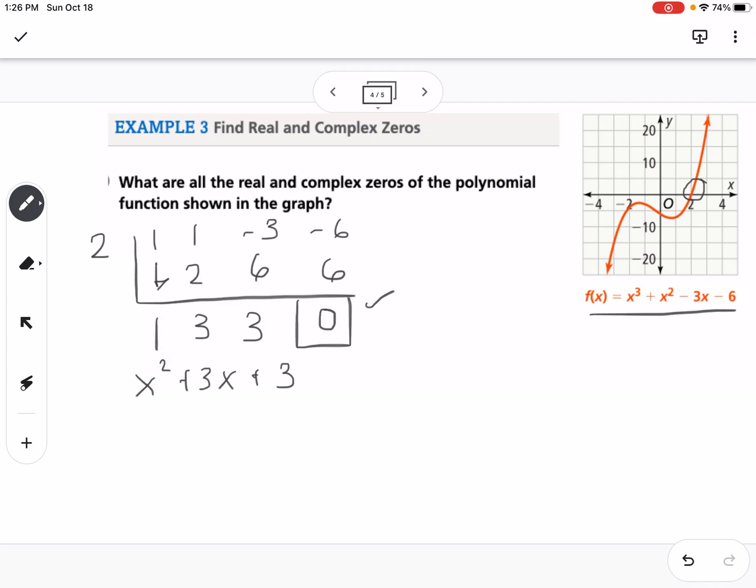So from that, we can't factor that. We know that we can't factor it because if you look at the picture of the graph, you can tell that the graph is not crossing the x-axis in any other spot except for 2. So what that tells me is that my remaining two zeros are going to be complex zeros.